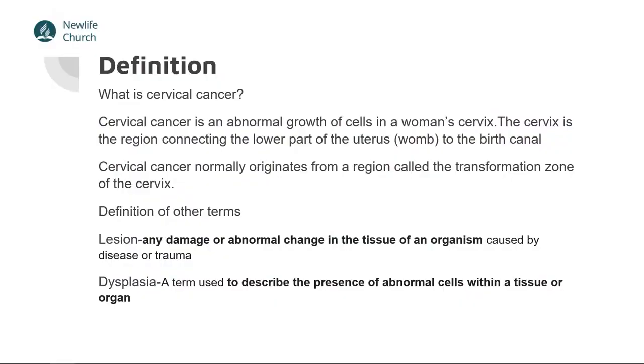So what is cervical cancer? By definition, cervical cancer is a constellation of abnormal growth of cells in a woman's cervix. The cervix is the part of the female genital system between the uterus — which is the womb — and the birth canal. A lesion is a focus of damaged cells in the tissues of an organism, usually caused by trauma or a disease process. Dysplasia is a term used to define the presence of abnormal cells within a tissue or organ.